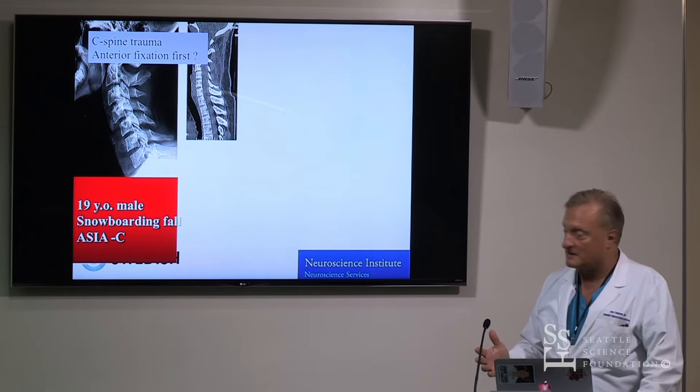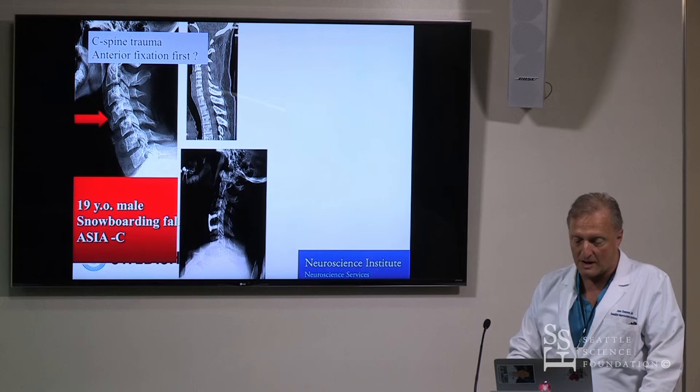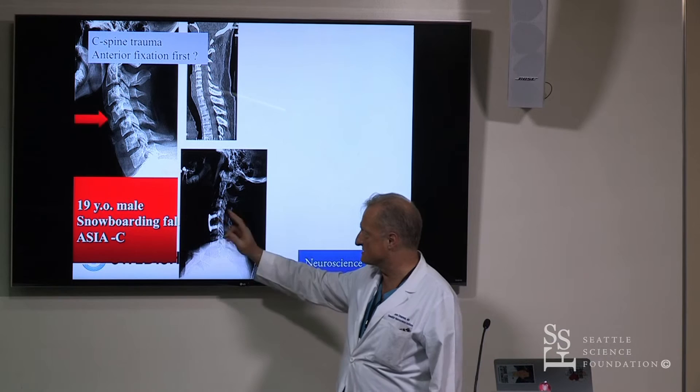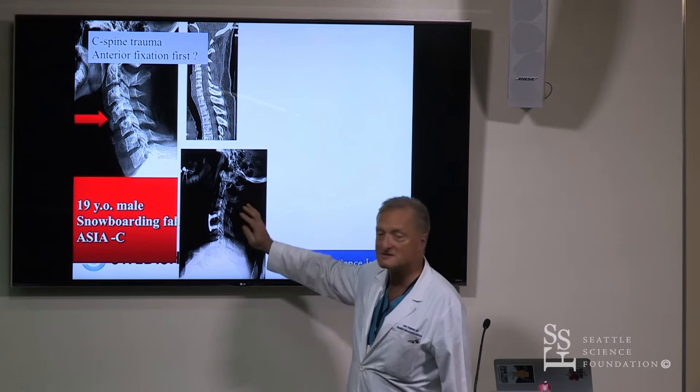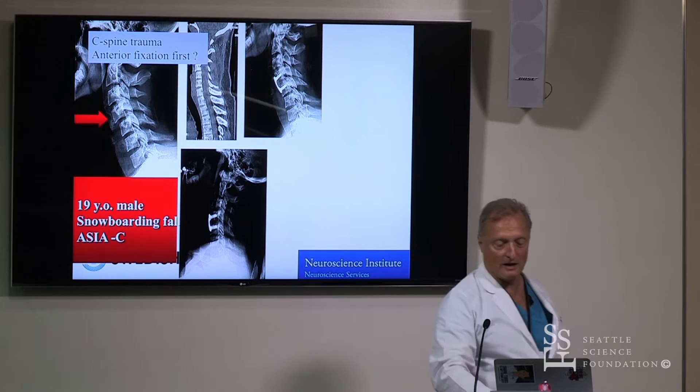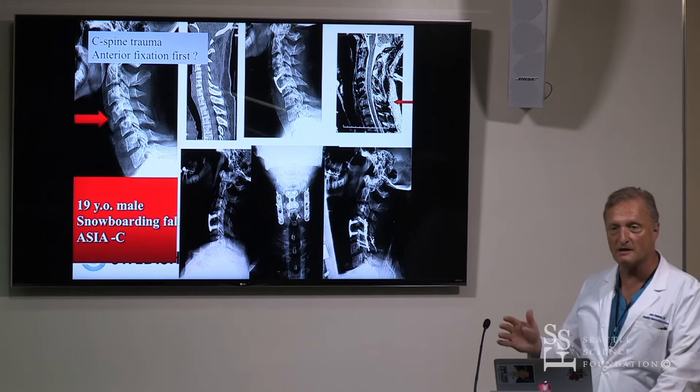For the neck: if you have a dislocated neck, anterior surgery has become very popular — the patient is supine, it's a very simple approach we'll practice in the lab today. But the devil is in the detail. In one case, a ligament injury above the level was not recognized. A lateral x-ray and palpation would have revealed the injury above. The patient started failing, with an intraspinous ligament injury, requiring posterior fixation. Remember that anterior-only fixation for dislocations is prone to failure. The most powerful fixation for the neck is posterior.